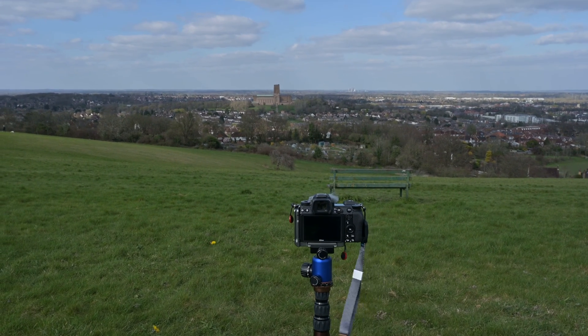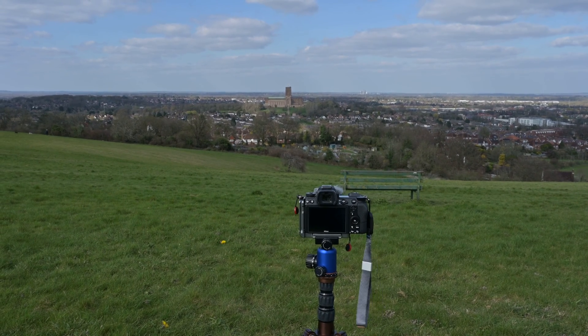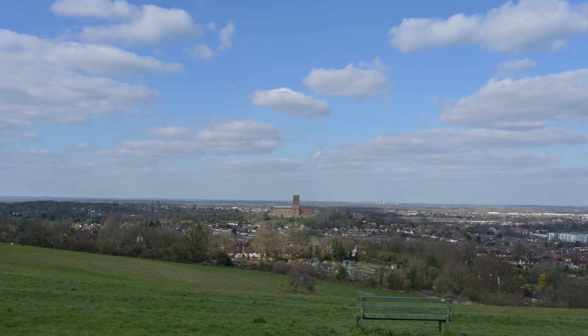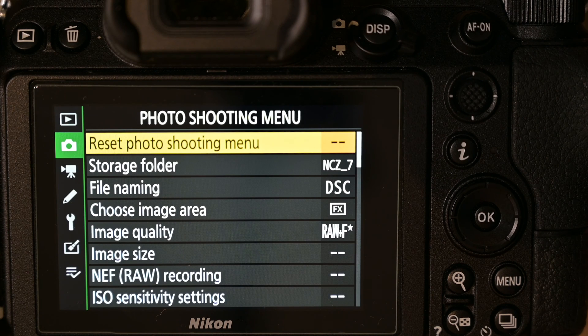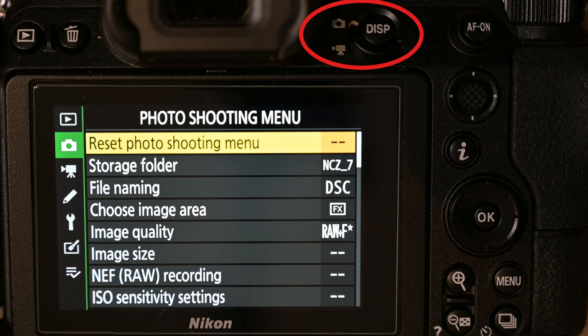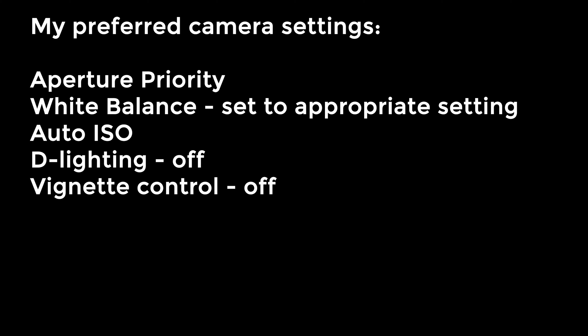I've set the camera up looking out towards the cathedral from the hills with a bench as a little bit of foreground interest. The clouds moving across the sky should make for an interesting time-lapse. When setting up for a time-lapse movie, even though we're taking a time-lapse movie, the camera is actually taking individual shots and then stitching them together in-camera to make a movie, so we've got to have the camera set to stills photography.